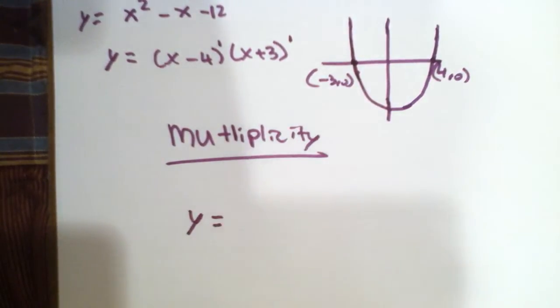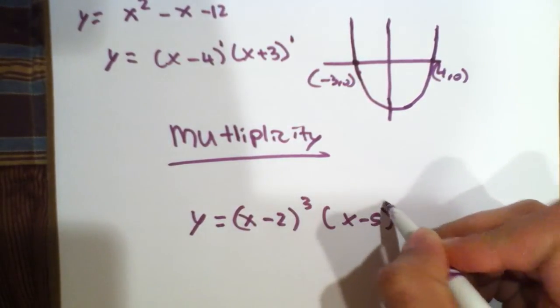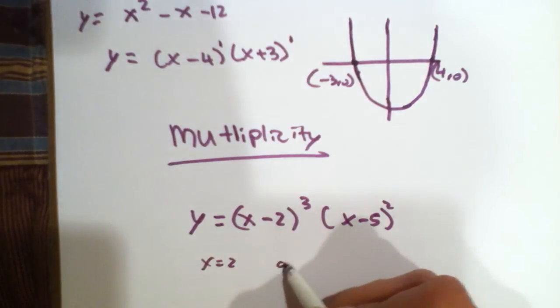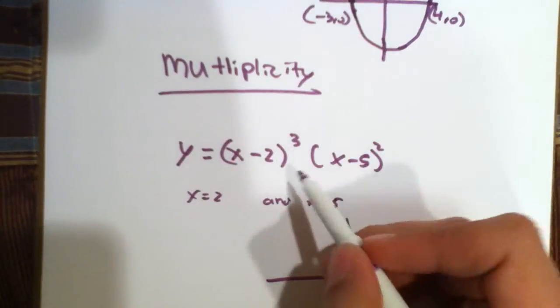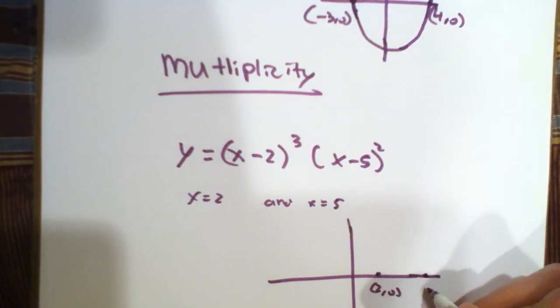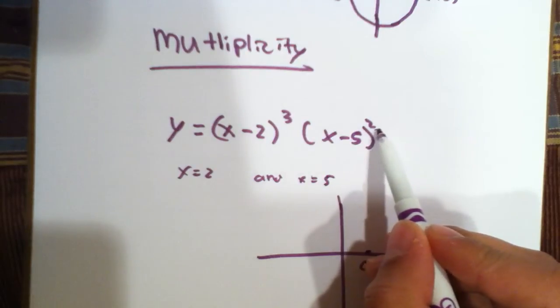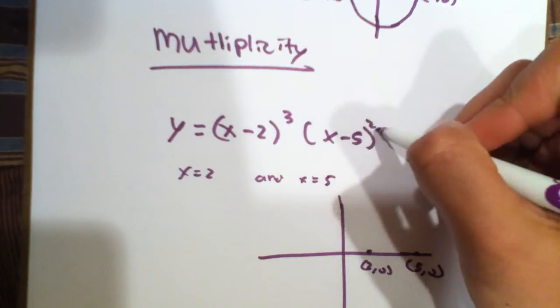x minus 2 cubed x minus 5 squared, the roots of this would be, as you can see, x equal to 2 and x equal to 5. These are the two points. This would equal 0. If we were to graph this, we would see that it would go through the x-axis at x equal to 2, but it would only touch at x equal to 5. Because here, the exponent is even, so it has an even multiplicity.